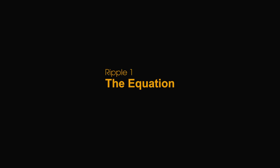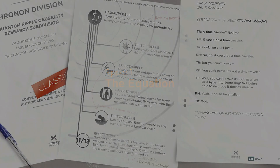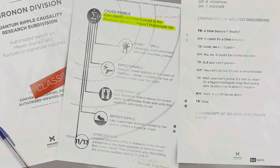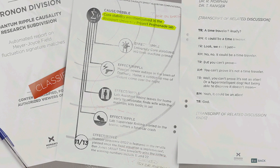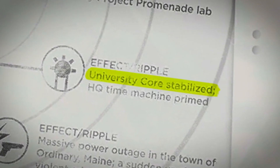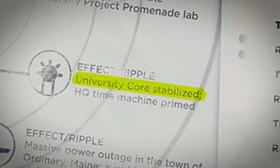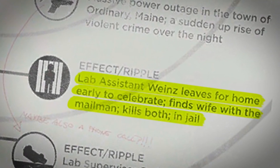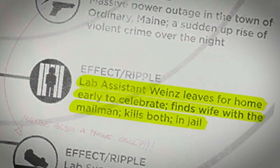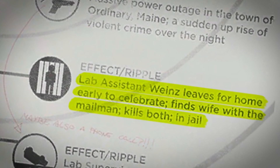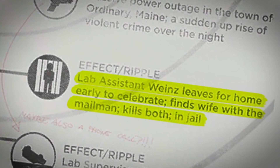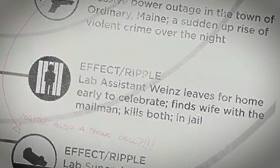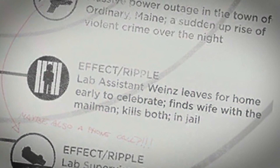Ripple 1: The Equation. Nature of pebble: core stability equation solved in the Riverport University Project Promenade lab. The obvious effects include the university core being stabilized. As a result of the problem being solved, a lab assistant named Weintz left work early. He discovered his wife in bed with the mailman and kills them both. Later he was arrested. Drastic things can change by something as simple as working late or leaving work early.